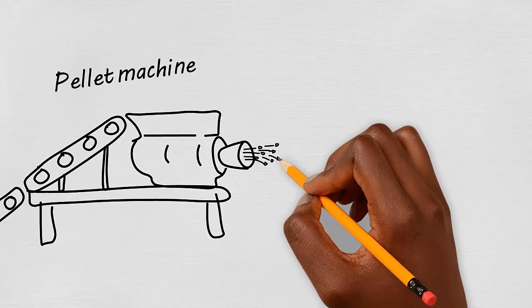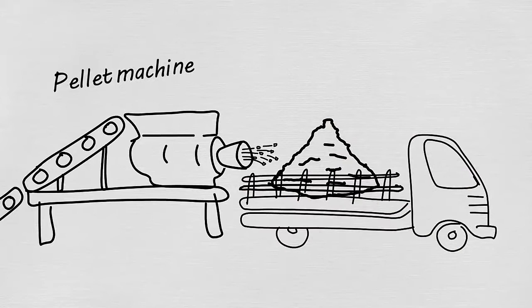The pellet machine compacts and dries the waste, making it perfect for storage. As in my village, all the waste is produced in just a few months of the year.